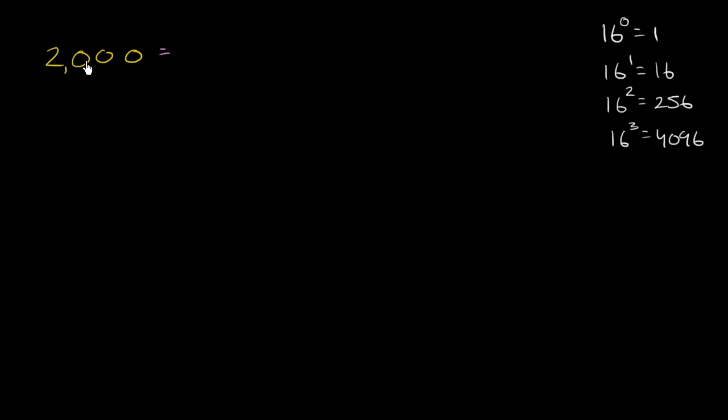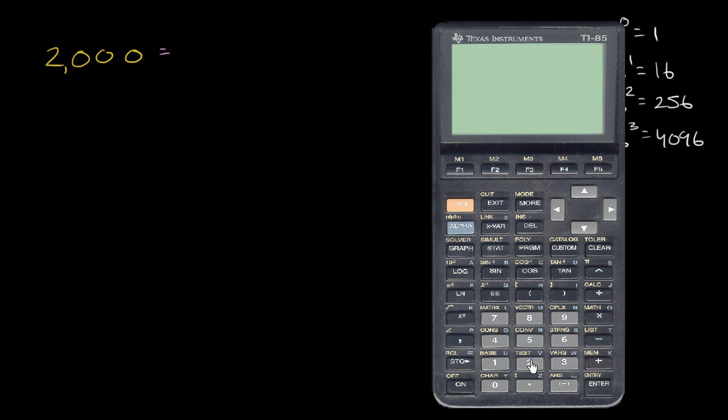So what's the largest power of 16 that goes into, that is less than or equal to 2,000? Well, it's going to be 256. And how many times does 256 go into 2,000? Well, I'll get a calculator out for that.